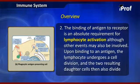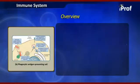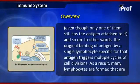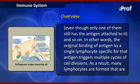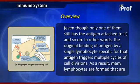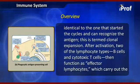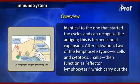Upon binding to an antigen, the lymphocyte undergoes cell division and the two resulting daughter cells then also divide, even though only one of them still has the antigen attached to it, and so on. The original binding of antigen by a single lymphocyte specific for that antigen triggers multiple cycles of cell divisions. As a result, many lymphocytes are formed that are identical to the one that started the cycle, and this is termed clonal expansion.